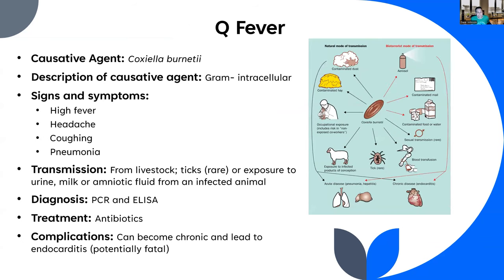The last of the bacterial infections is Q fever, caused by an intracellular gram-negative bacterium called Coxiella burnetii. Symptoms include high fever, headache, coughing, and pneumonia. The natural mode of transmission is typically through exposure to livestock — infected sheep, cattle, or horses. It is also possible to get it through tick exposure, though that's rare. You can also get it through unpasteurized milk, or by touching amniotic fluid or urine from an infected animal.